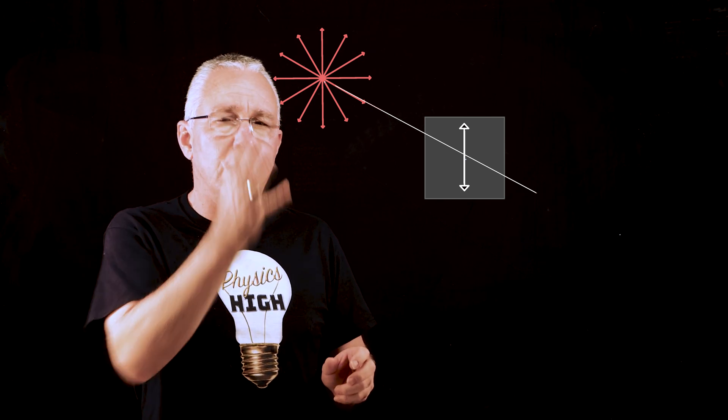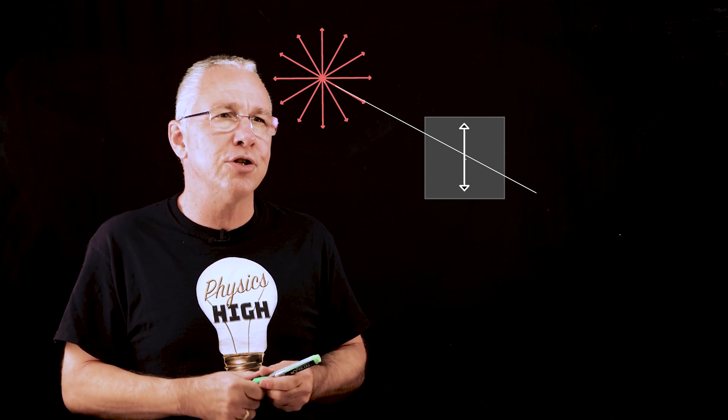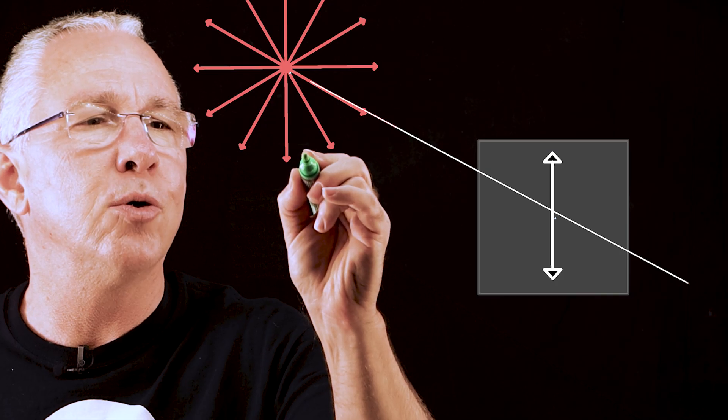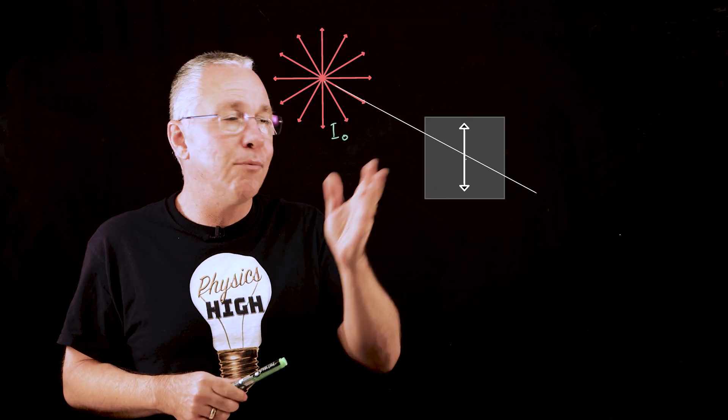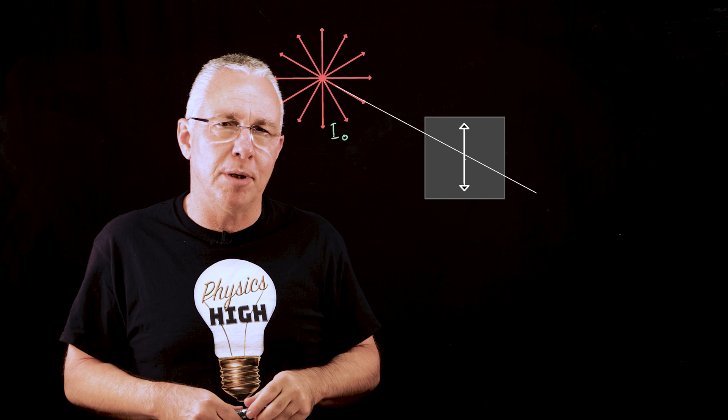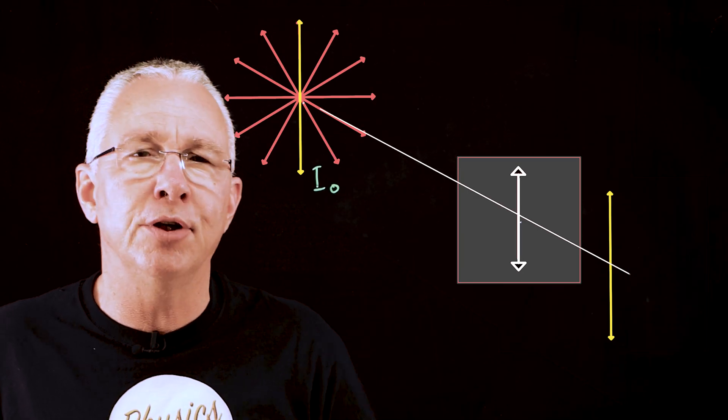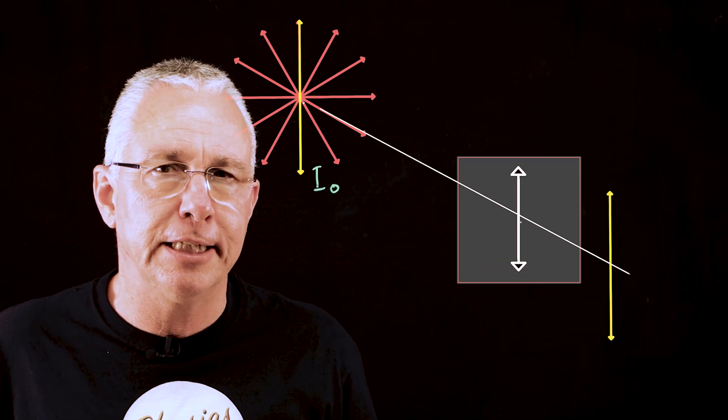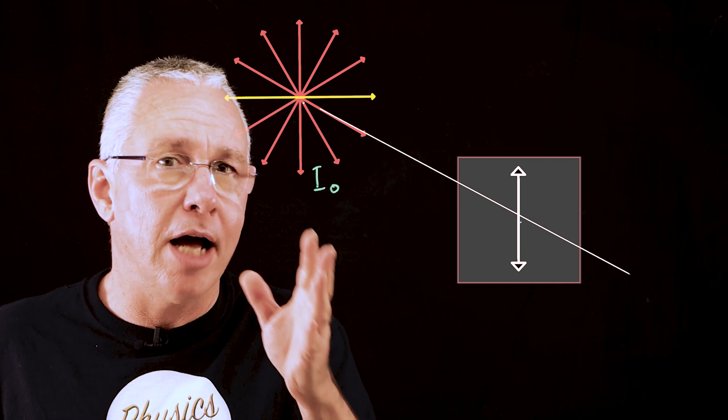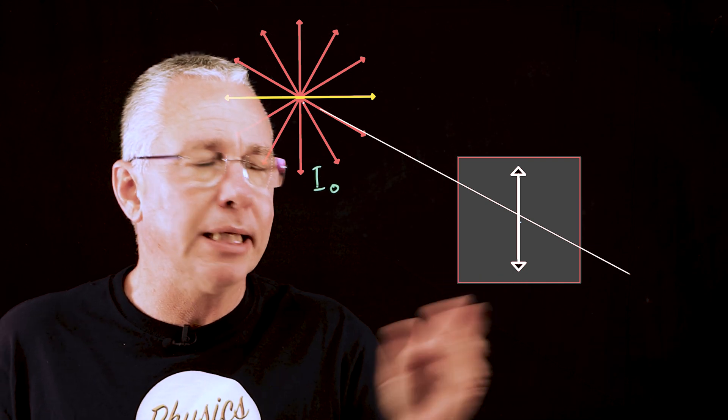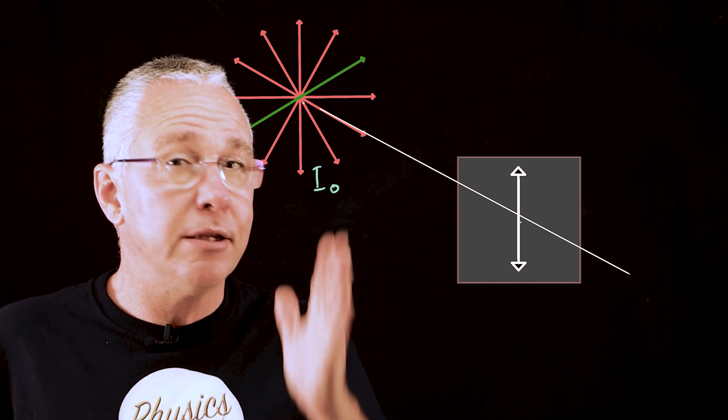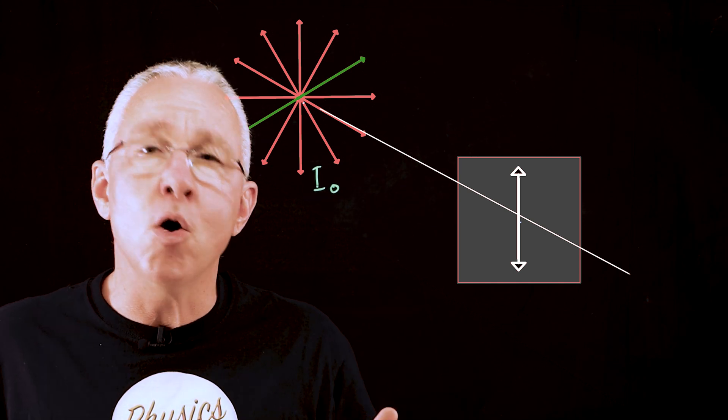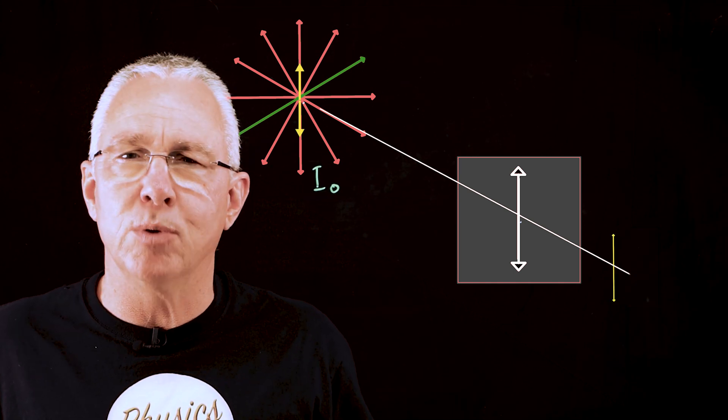So if we have unpolarized light it will have a certain intensity which we're going to call I naught. If we pass that through a filter which has a vertical axis of polarization all electromagnetic waves aligned vertically will pass through unaffected. The electromagnetic waves aligned horizontally will be completely absorbed. And any electromagnetic wave aligned in between the vertical and the horizontal only their vertical components will pass through.